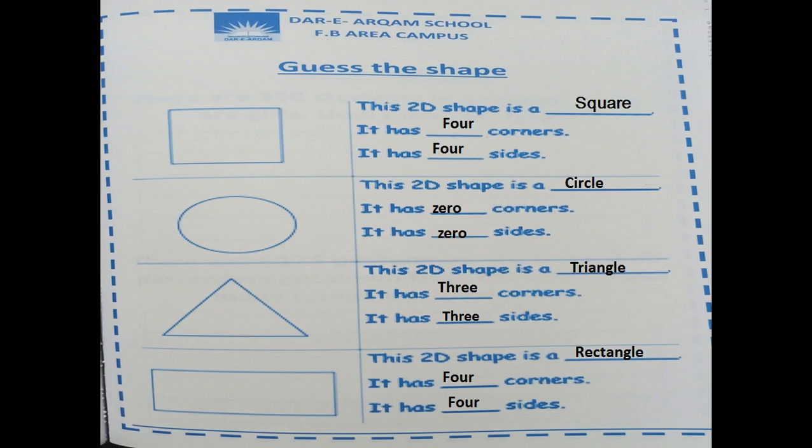It is the circle. This is a circle. It has zero corners and it has zero sides.